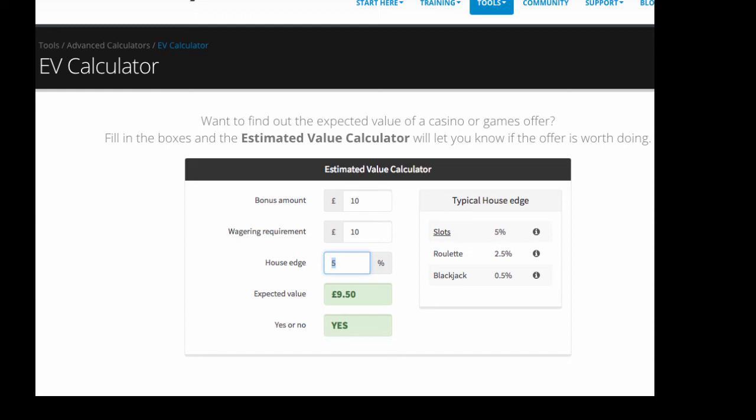Now, we could hit the jackpot on the first spin, we could lose every single spin and be £10 down. But this is taking into account the house edge and the wagering that we're actually doing. So if we then take the 50p that we've lost there, and the initial wagering, which was a loss of £2.50, then that's £3 loss overall. If the site is actually giving us £10, because remember, it's a £10 bonus, so in effect,